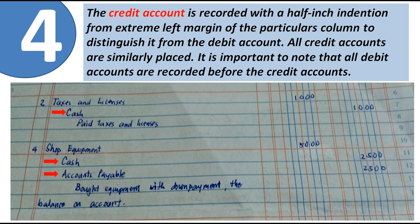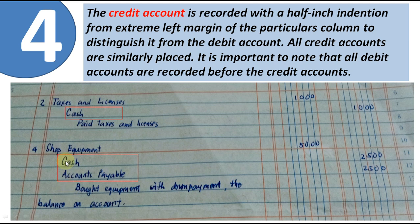The credit account is recorded with a half-inch indention from the extreme left margin of the column to distinguish it from the debit account. You don't need a ruler to measure — just estimate. All credit accounts are similarly placed. If there are two credit accounts, they are both indented the same half-inch and written at the same level.